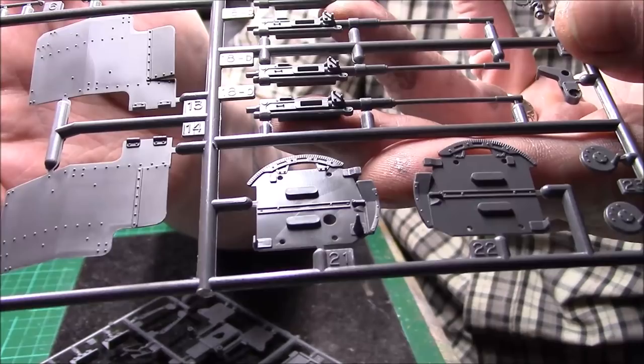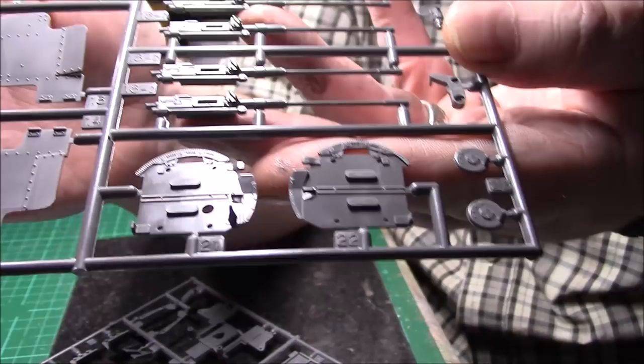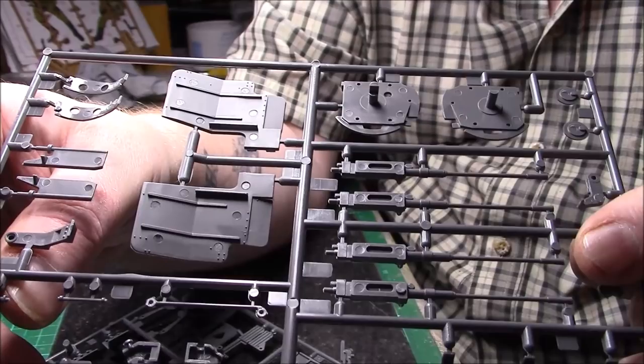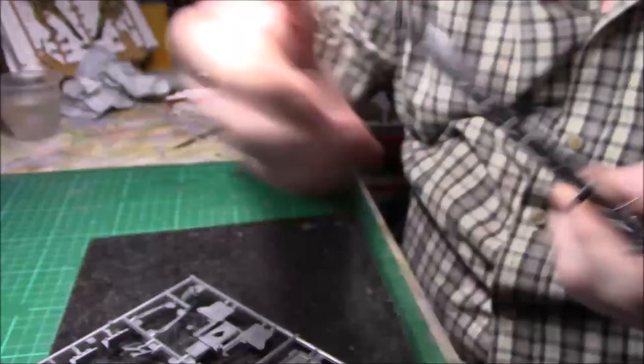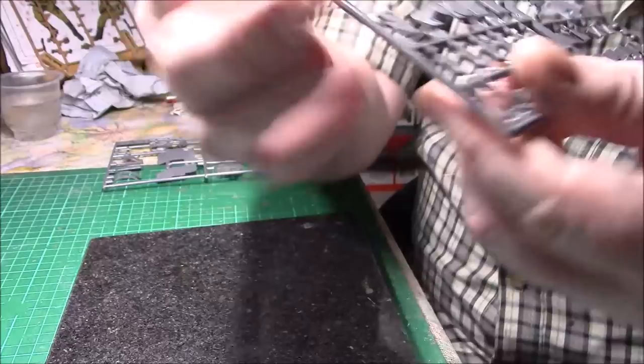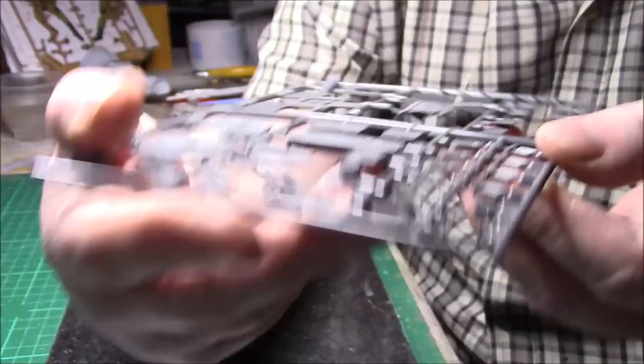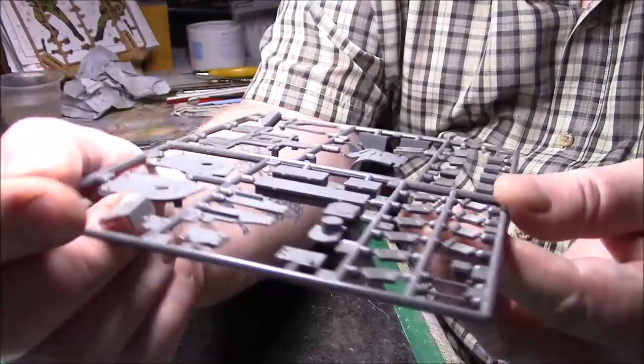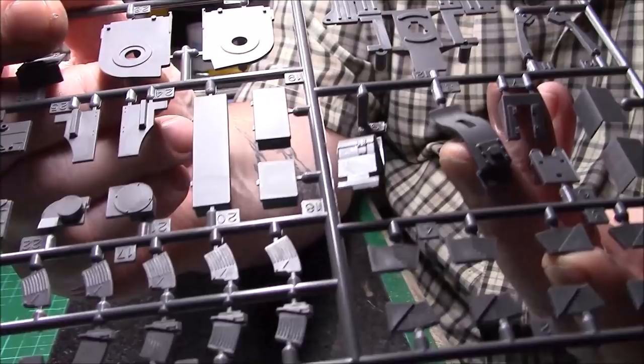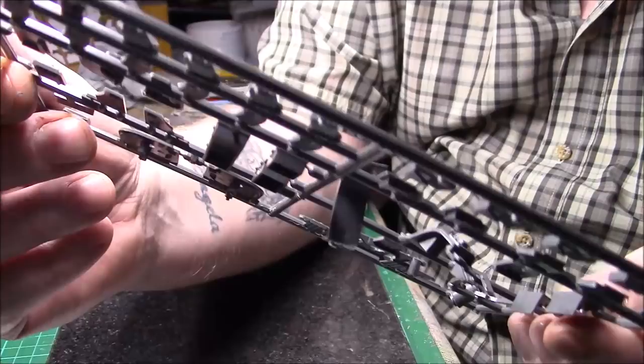Again, the detail is, there's nothing wrong with it. No flash. Injection marks shouldn't be, injection marks are on the rear. You're not going to see most of these. So it's quite nice. And again, we have these look like the ammunition clips. Nice again. And all the injection marks are on the rear.